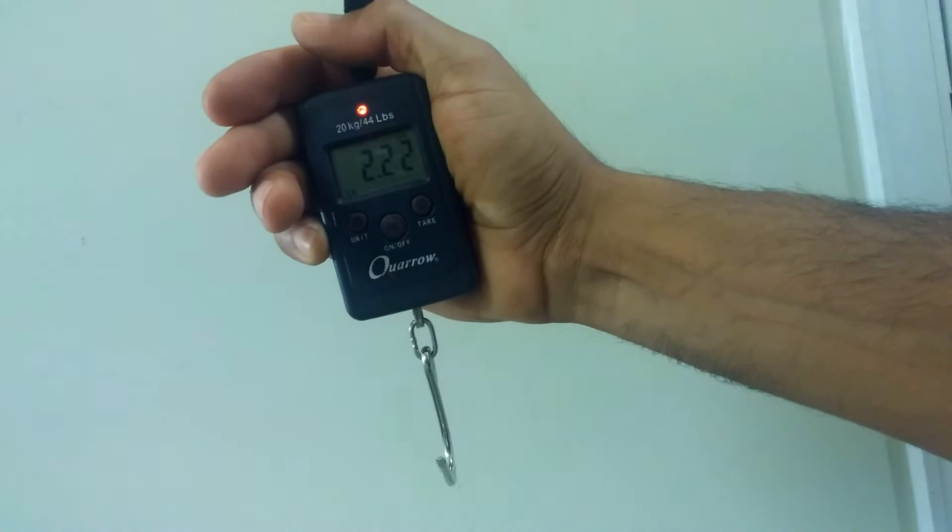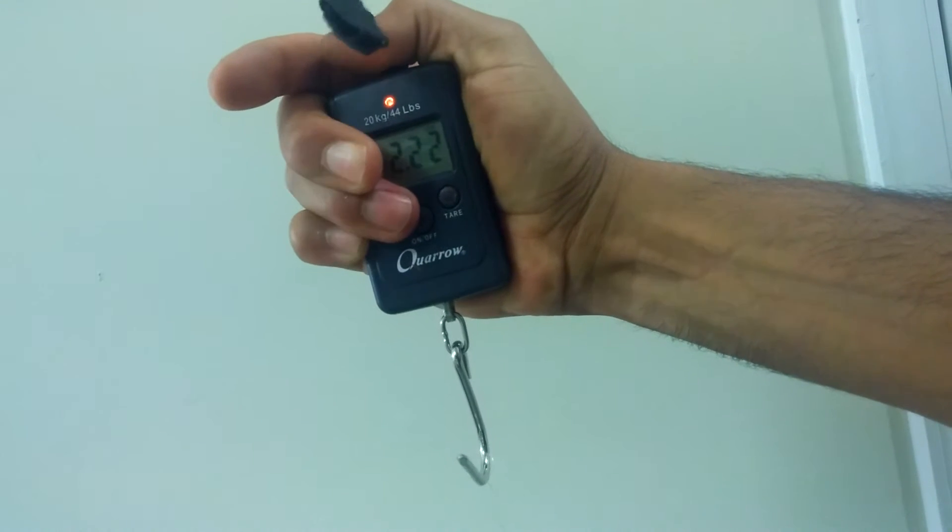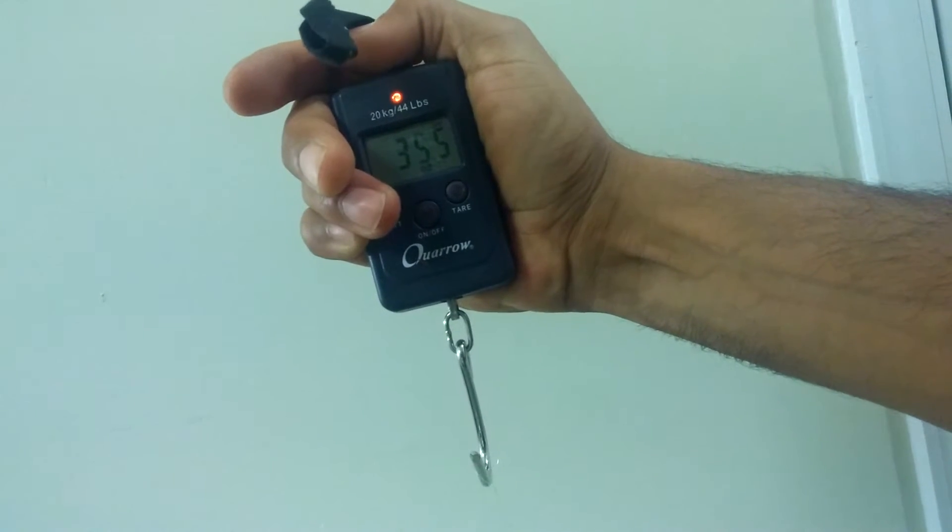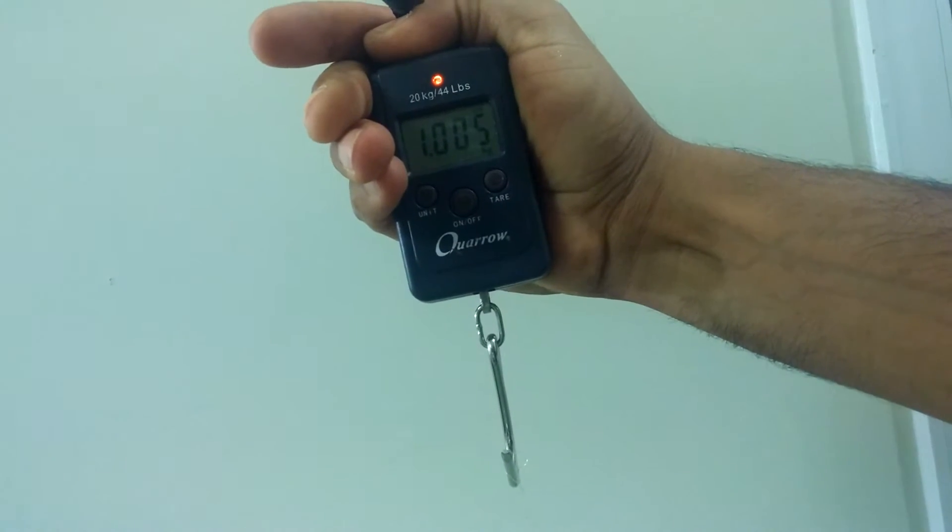What's up YouTube? This is maintenance mouse. 2.2 pounds, which is 35.5 ounces, 1 kilogram. Just for the record.